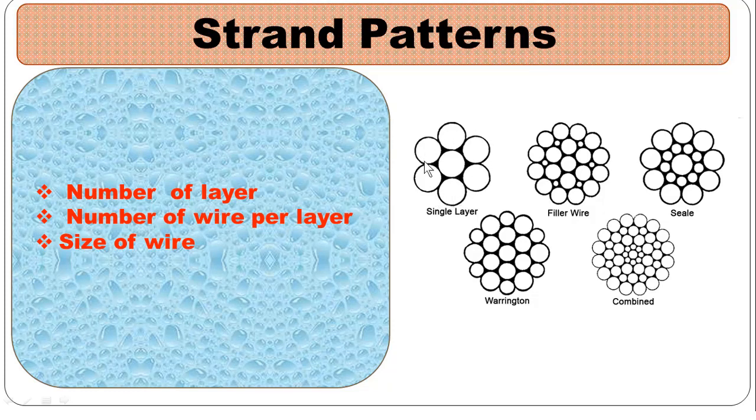Filler wire pattern: we have two layers of wire around a center. The diameter of the wire in both layers is the same, but the quantity of wire in the inner layer is half of the number of wires in the outer layer.